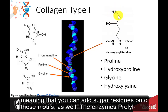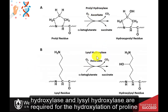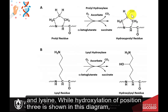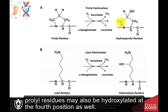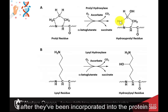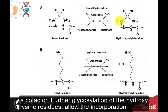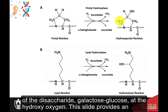The enzymes prolyl hydroxylase and lysyl hydroxylase are required for the hydroxylation of proline and lysine. While hydroxylation of position 3 is shown in this diagram, prolyl residues may also be hydroxylated at the fourth position. Hydroxylase enzymes modify amino acid residues after they have been incorporated into the protein as a post-translational modification. These enzymes also require vitamin C as a cofactor. Further glycosylation of the hydroxylysine residues allows incorporation of the disaccharide galactose-glucose at the hydroxy oxygen.